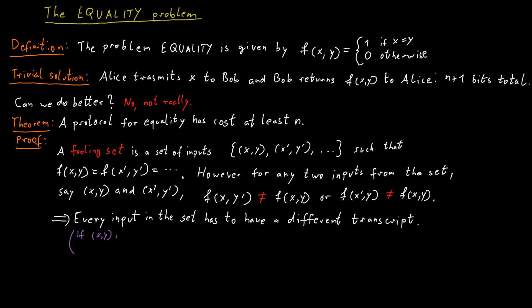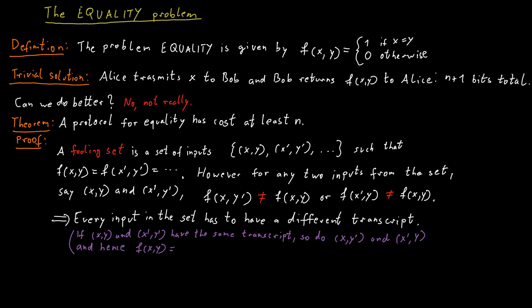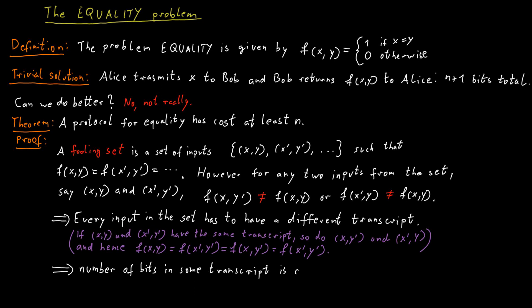Because if two of them were the same, what would happen? We would have f of x, y and f of x prime, y prime should be equal. But then we can mix and match, and we get f of x prime and y — and that might be a different result, but it would have the same transcript. So Alice and Bob could not possibly give a different answer to the one they would get for f of x and y. So therefore, we know something about the number of bits that Alice and Bob need to exchange — because they need to exchange at least log of the size of the fooling set many bits. Otherwise, two of the transcripts would be the same and everything would fall apart.